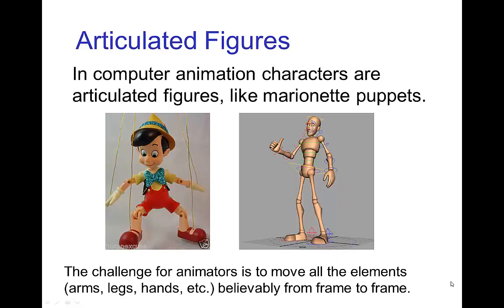Joints. In computer animation, the motion of characters is similar to positioning puppets in that they are articulated figures with movable joints, and so just posing the characters frame by frame gives you the motion of the character, specifying each of the limbs like the arms, the legs, and parts like the hands.